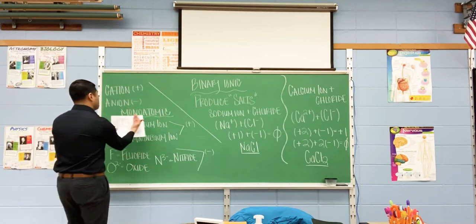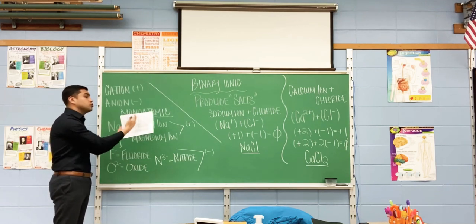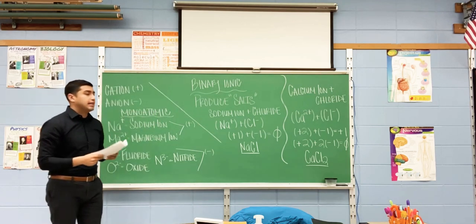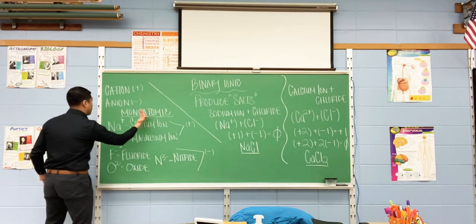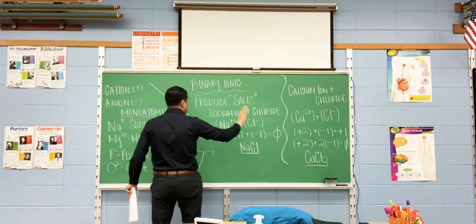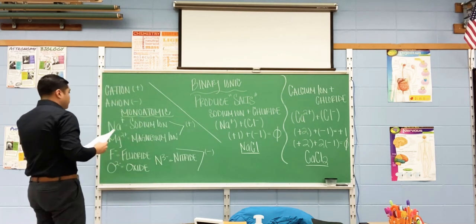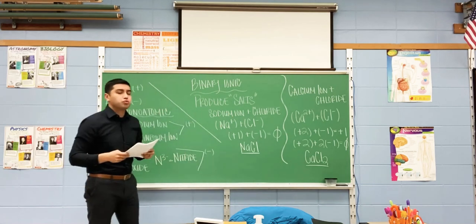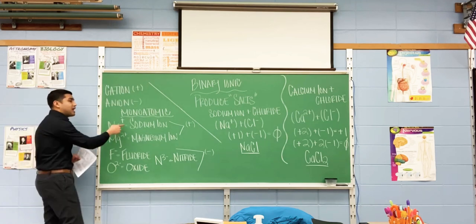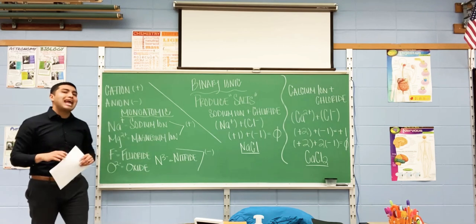The further right you move on your periodic table, the less metallic the elements are. The further left you are, the more metallic they are. So metals tend to be towards the left; non-metals are towards the right. In the middle are the transition elements — we'll talk about those later. If you're naming positive ions, you just add 'ion' at the end. If you're naming negative ions, you add -IDE at the end.